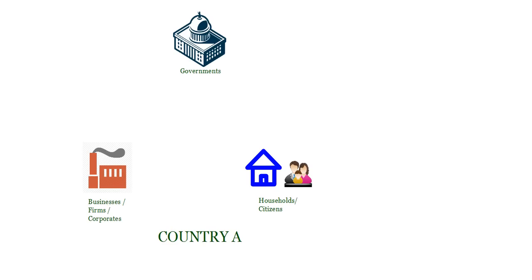The three most important players or agents in an economic system are: the governments; the households and citizens, people who are living in that country; and finally, the firms, businesses and corporates.